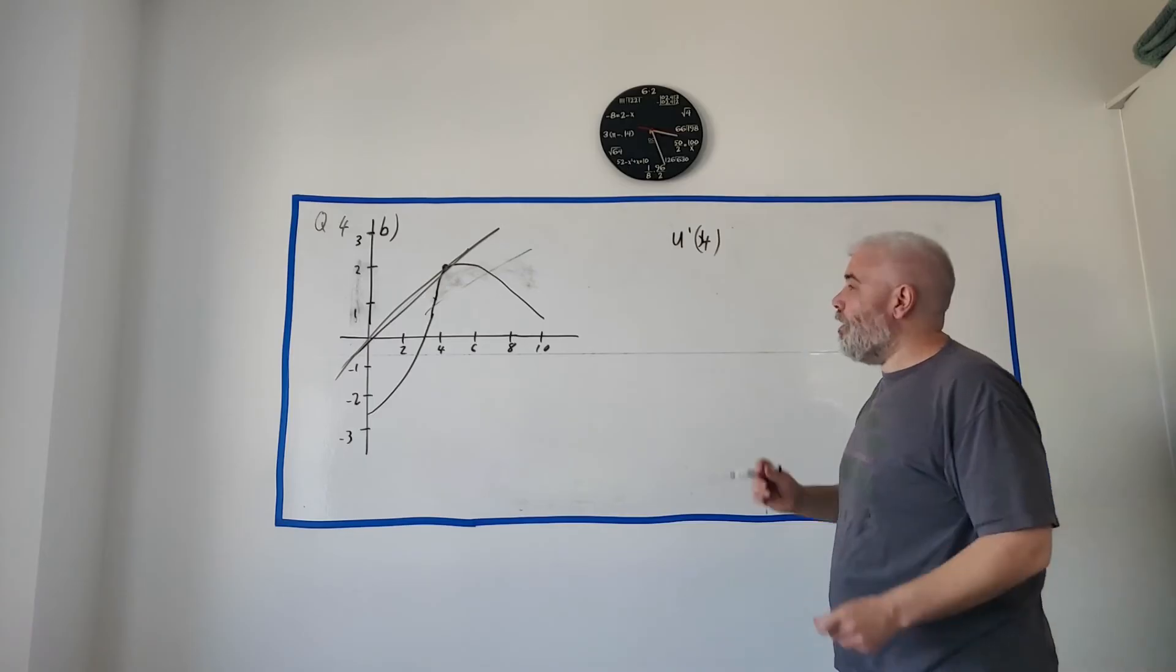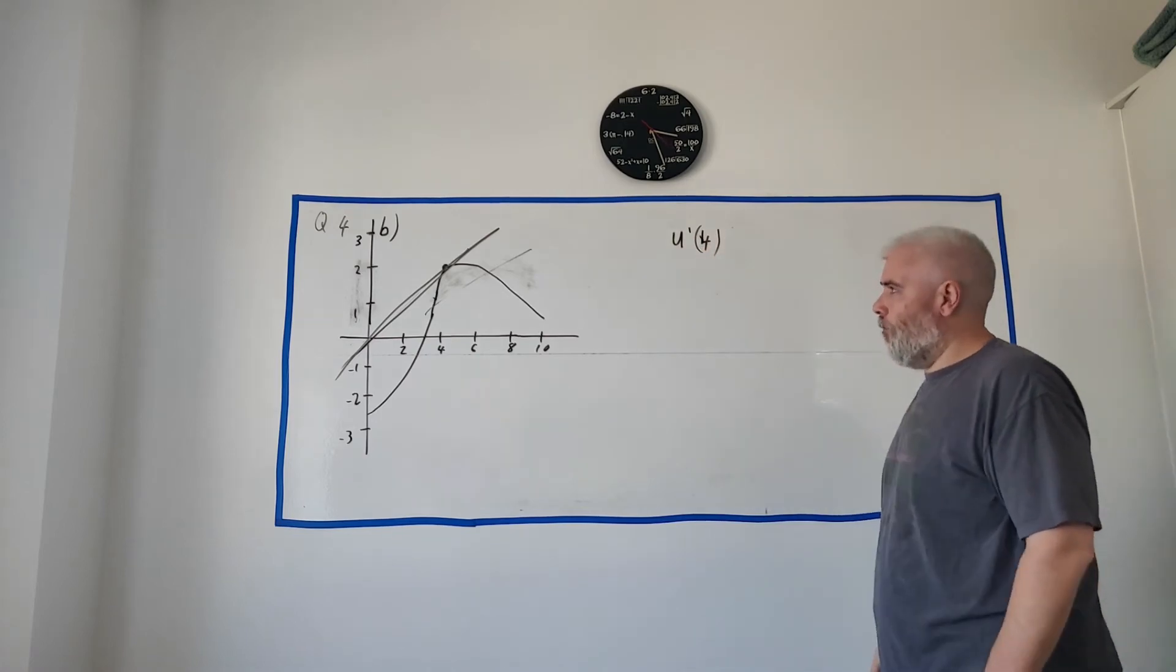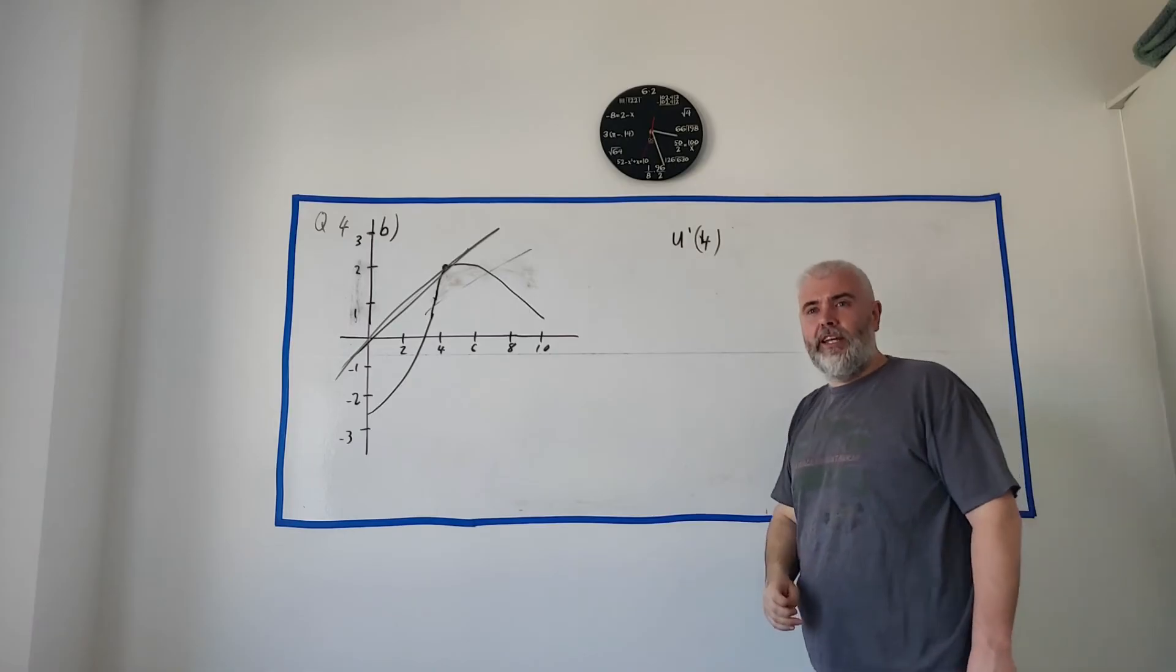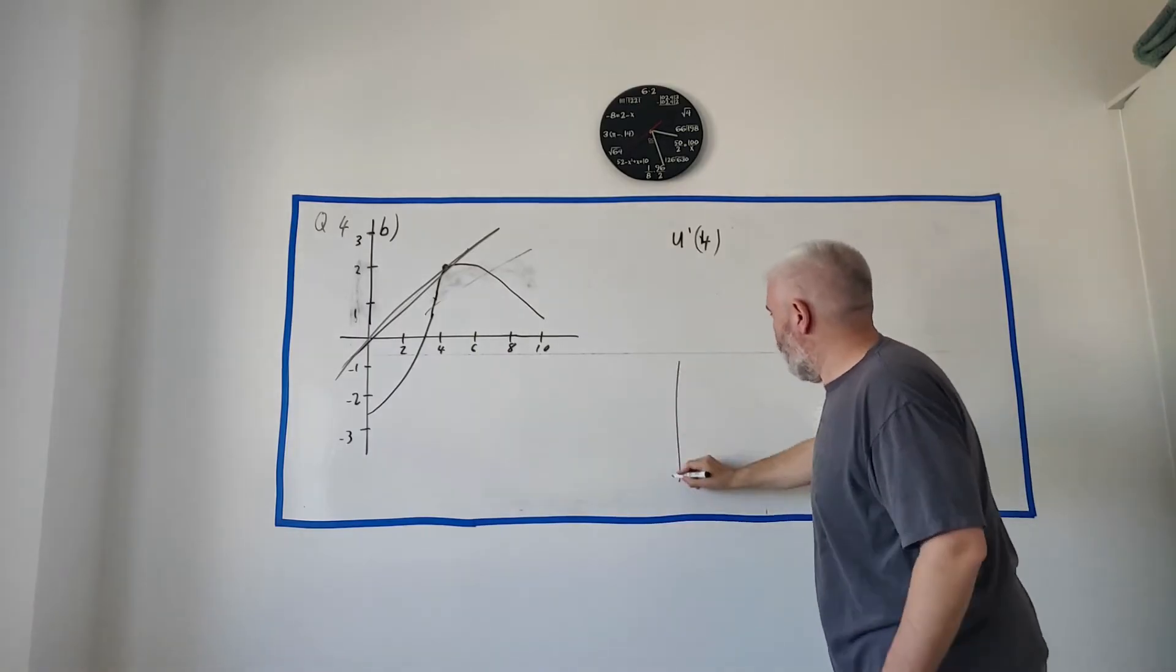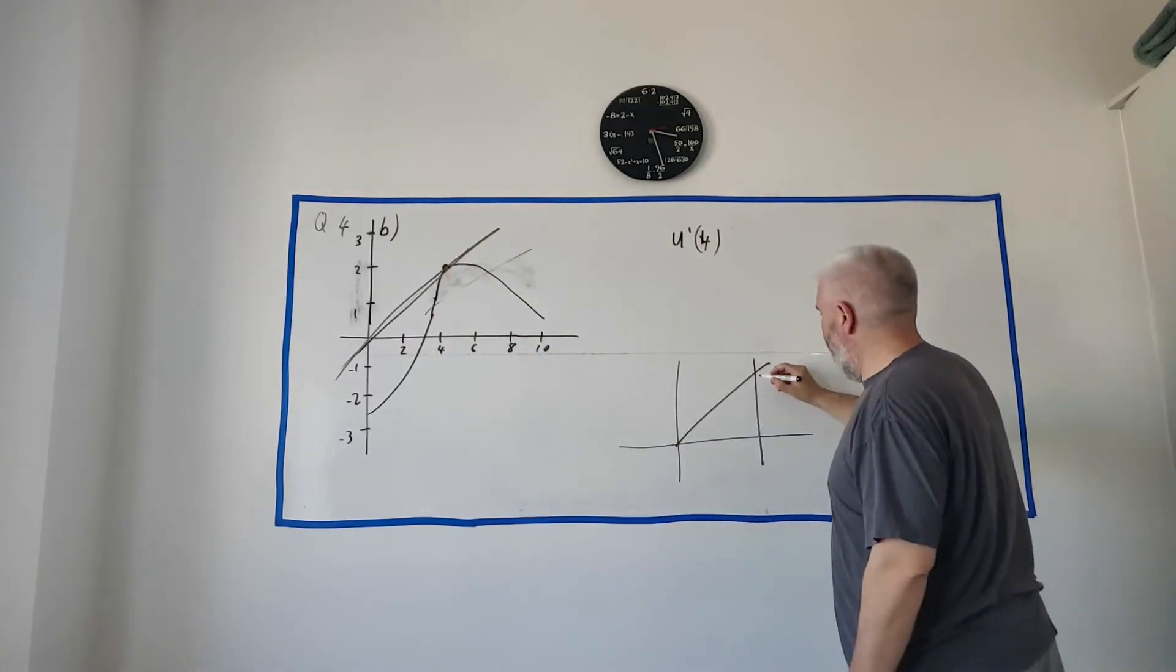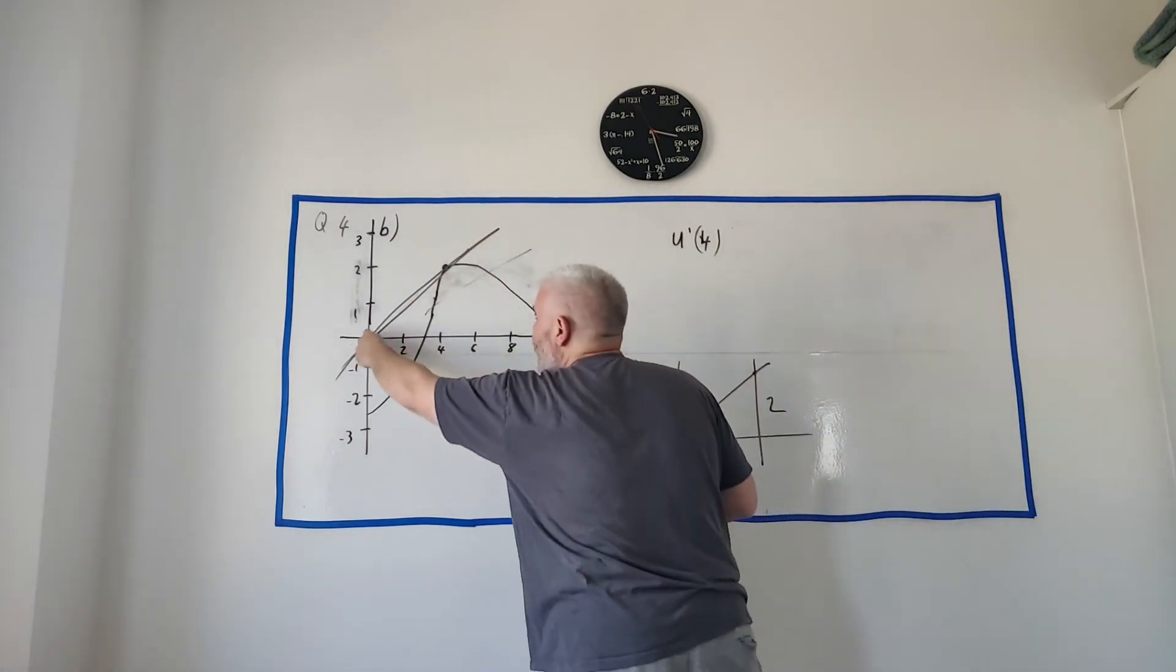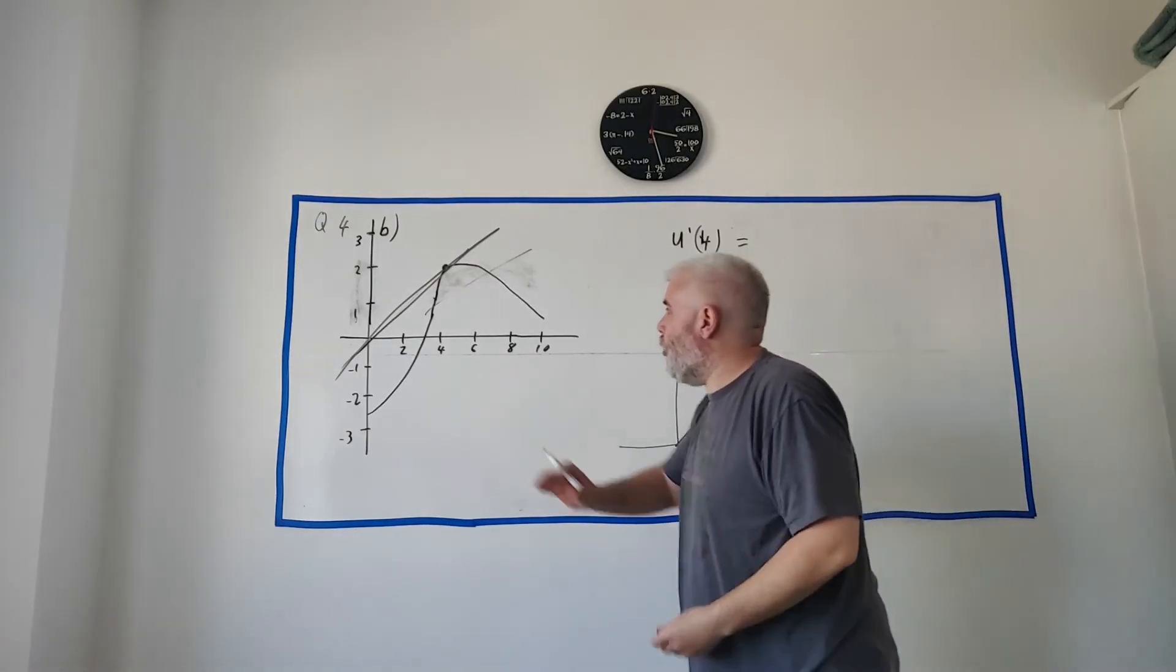Okay, so they've asked you to draw a tangent and use that tangent to find the value of u prime four. So again, from the other part, we need to know that the derivative, from part a, we need to know that the derivative of something is the same as the slope. And we have a line now. Let me draw that again, quite roughly. We have a line, that's that line here. There's the point four, two. So that's two high and four wide.